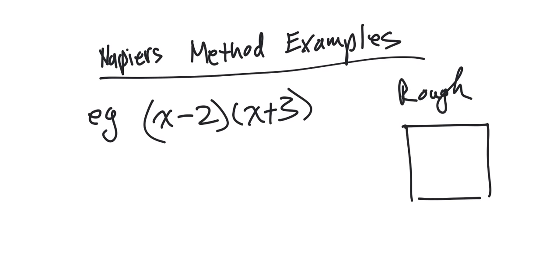Since there are four terms, I'm going to make sure that there's exactly four spots in my box. I extend it out here. The first part of the equation, x minus 2, I'm going to write like this: x and minus 2.